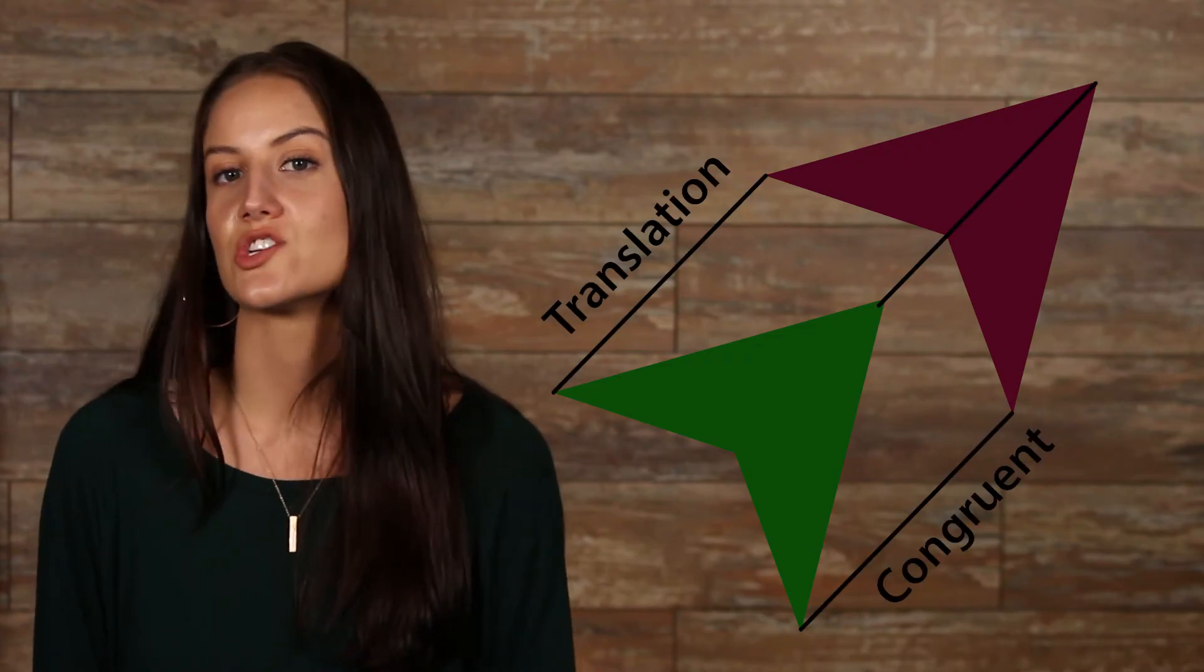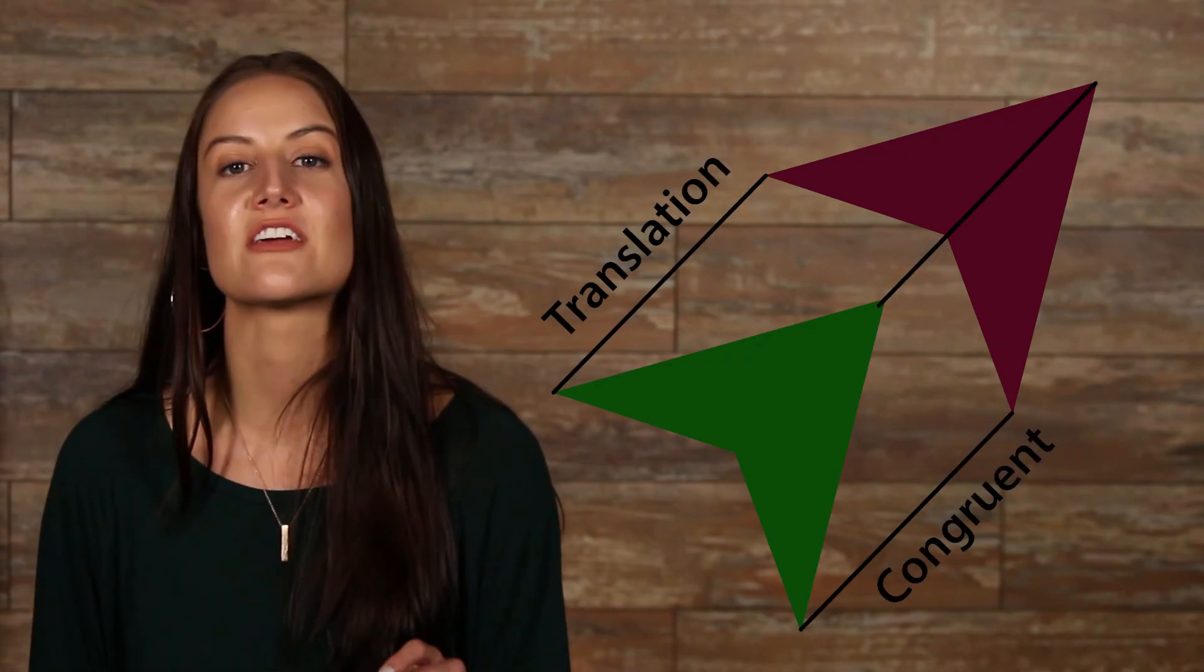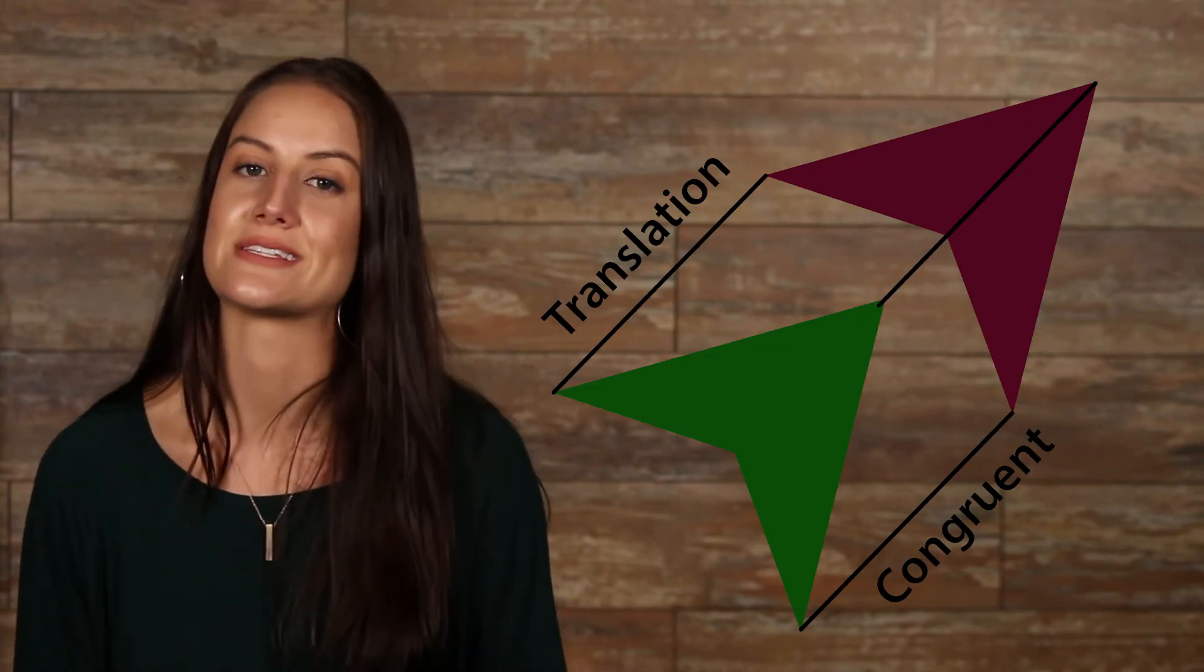These two arrows are identical in shape and size, so we know that they are congruent. However, they have been slid upwards. This movement is a translation.